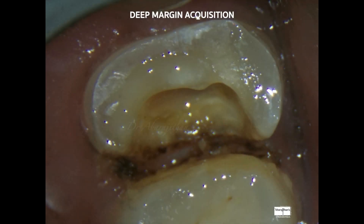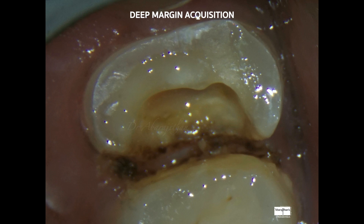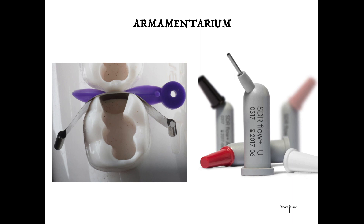Following this, I have now exposed the gingival seat that is subgingival and now I need to elevate it. As mentioned in a previous EndoTale, the matrix of choice I prefer for deep margin elevation is the saddle matrix with a good wedge. For elevating the margin, the material of choice is composite resin — my personal choice is bulk fill flowable composite, which is much easier and more predictable because of its self-leveling property. In this demonstration we are using SDR from Dentsply, though there are other brands that also have bulk fill flowables.